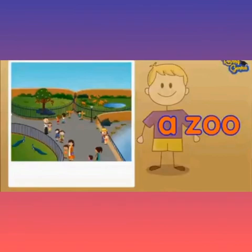Kids, what is this? Zoo. Here, zoo starts with the letter Z. Z is a consonant. So what should we use? A. A zoo.